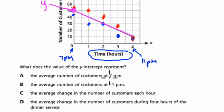Choice A: the average number of customers at 7 p.m. That's not going to work, right? Oh, wait. Actually, I think that does make sense. That's 7 p.m., and the y-intercept of the line is kind of like the average of those two.